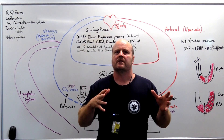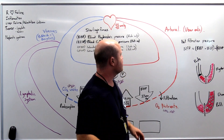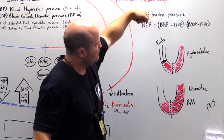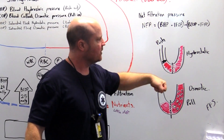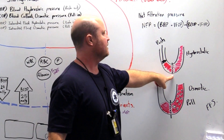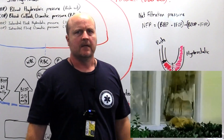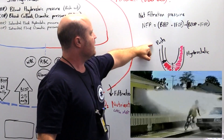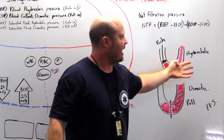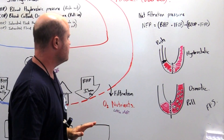Let's talk hydrostatic pressure first. Hydrostatic pressure is like a piston pushing fluid across a capillary membrane and forcing it through to the other side. So if we've got high hydrostatic pressure, fluid moves out — pushing fluid out of the capillaries.